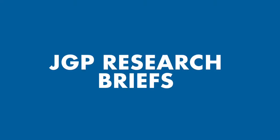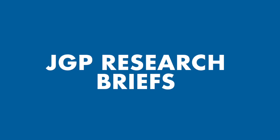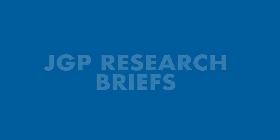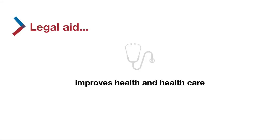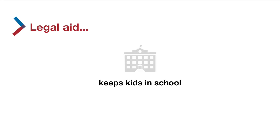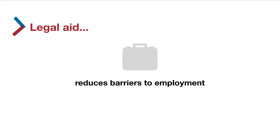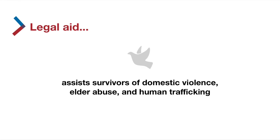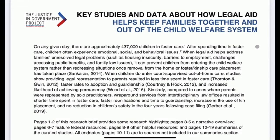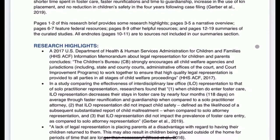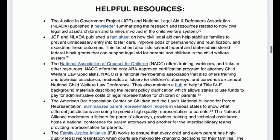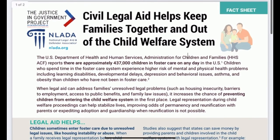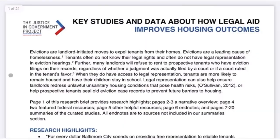Here, you will find over 15 research briefs spanning a range of populations and topic areas such as housing, health, education, employment, child welfare, consumers, and survivors. Each brief refers to a specific policy area and often has links to other resources. To start reading, select a topic and open the research brief.